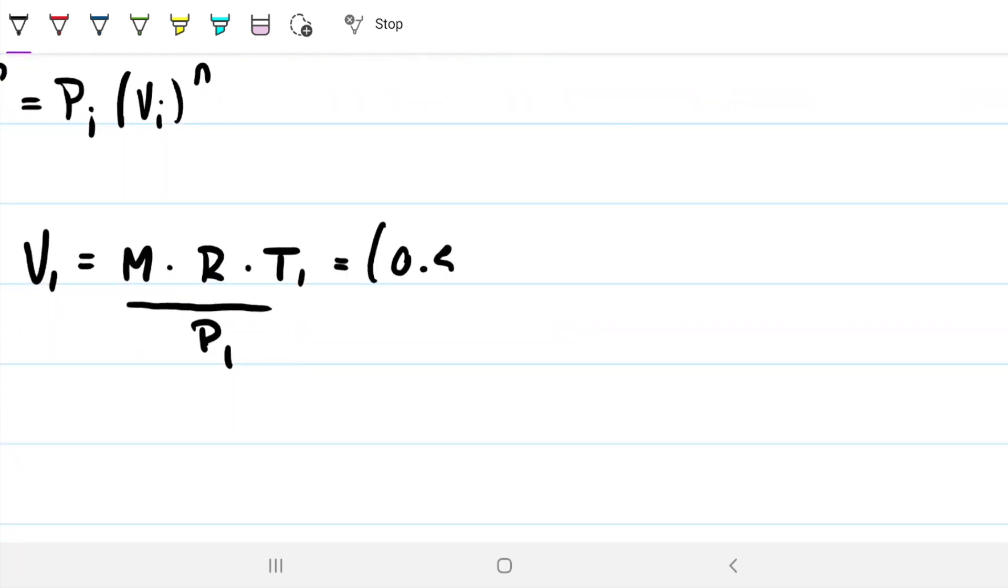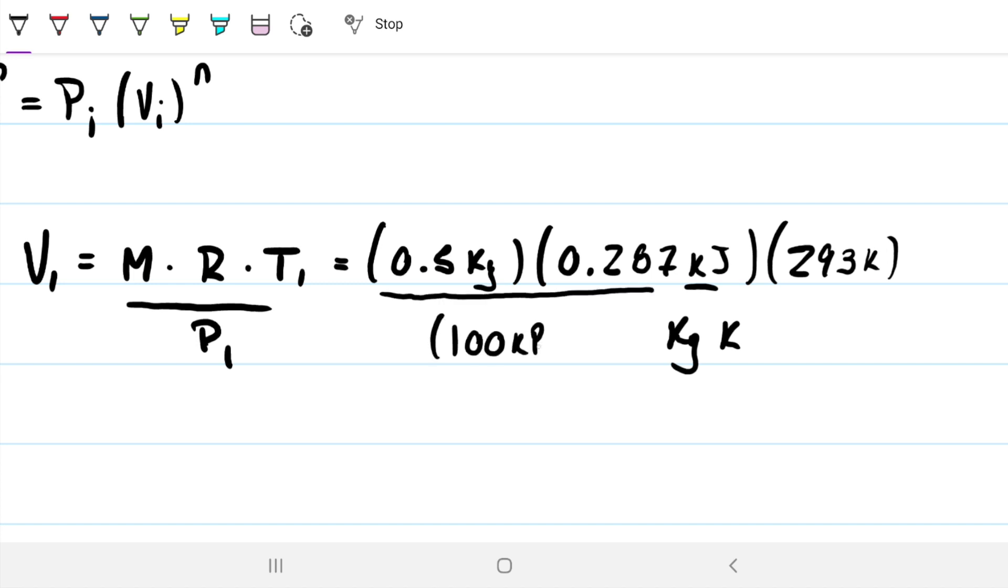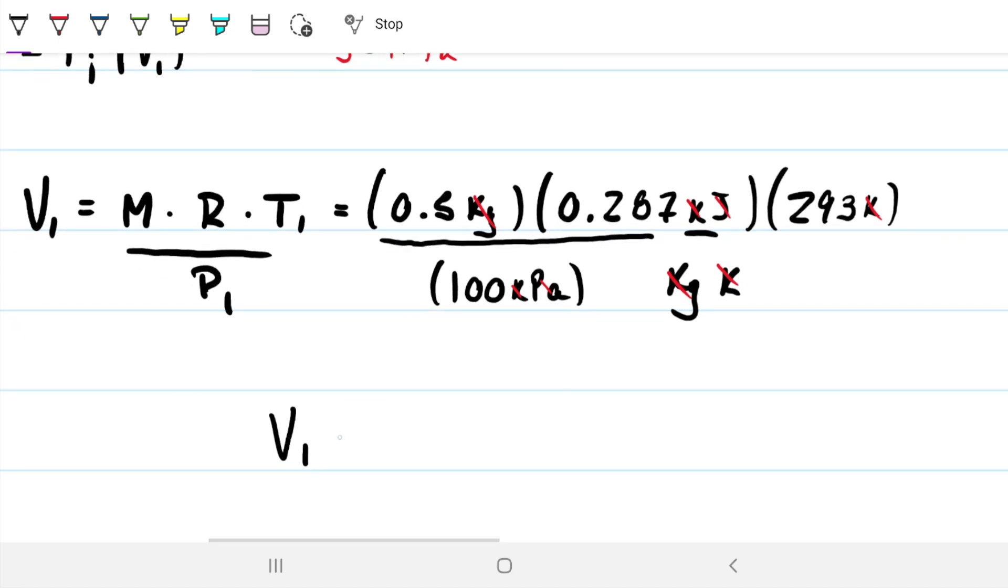Let's go ahead and do that. We have mass of 0.5, R was given to be 0.287 - it's quite useful to memorize this because you're going to use it a lot in thermodynamics. Temperature, we converted it: 293 K. And then I'm dividing the whole thing by the pressure, which was also given to be 100 kPa. The units work out: kilo cancels, kilograms cancel, Kelvin cancels, and kPa·m³ gives us joules, so we get meters cubed. We get about 0.42 m³. So that's the answer for part A.